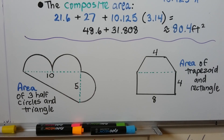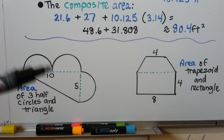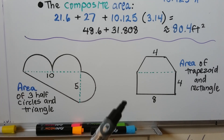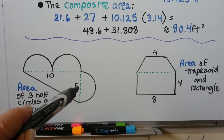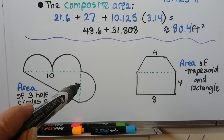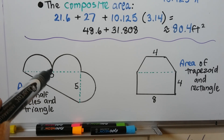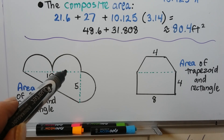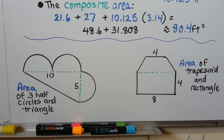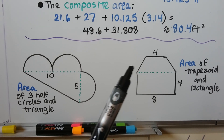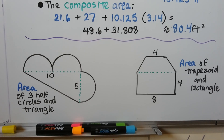You can find area with composite figures by adding. Here we would have three half circles and a triangle. If this is 5 then the radius is 2.5, and if this is 10, this point is a 5, which means that radius is also 2.5. For this one we do the area of a trapezoid and then the area of a rectangle and add them together.